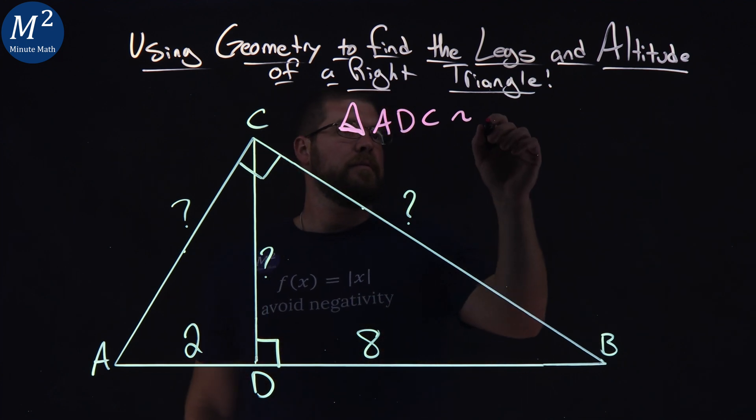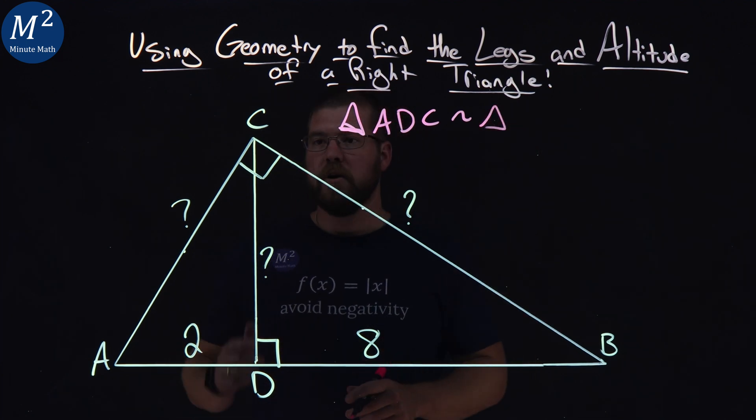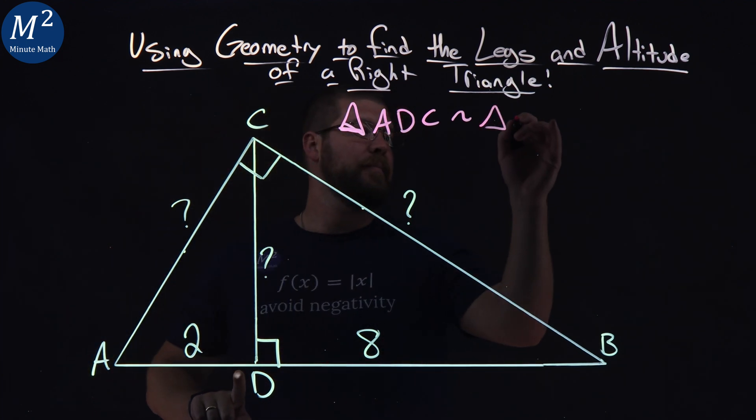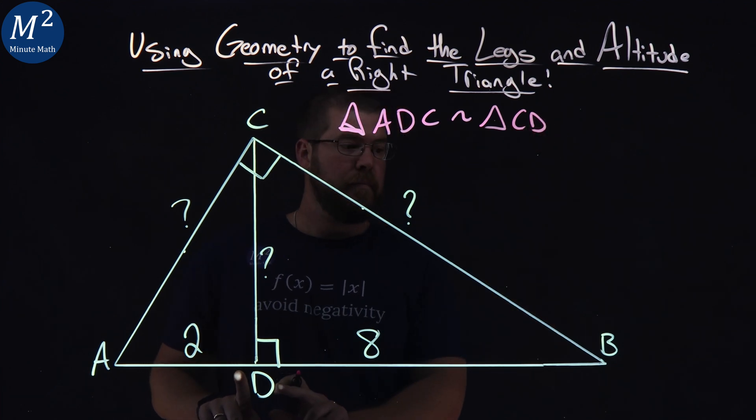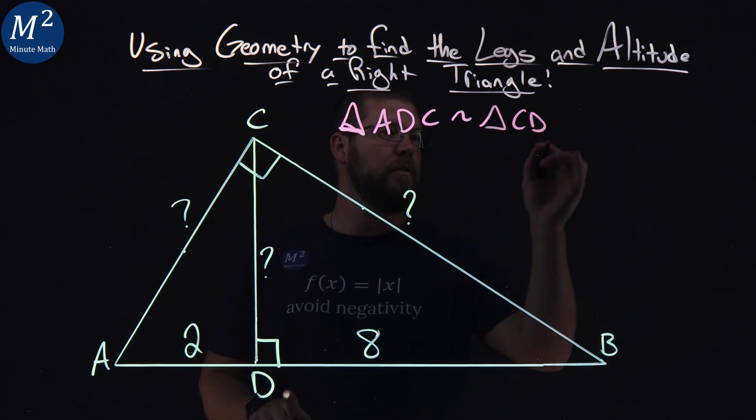And then that's similar to our triangle, small leg CD to then B, the long leg.